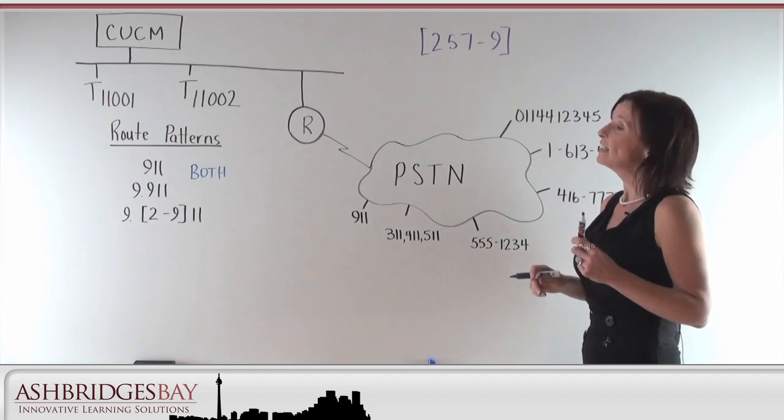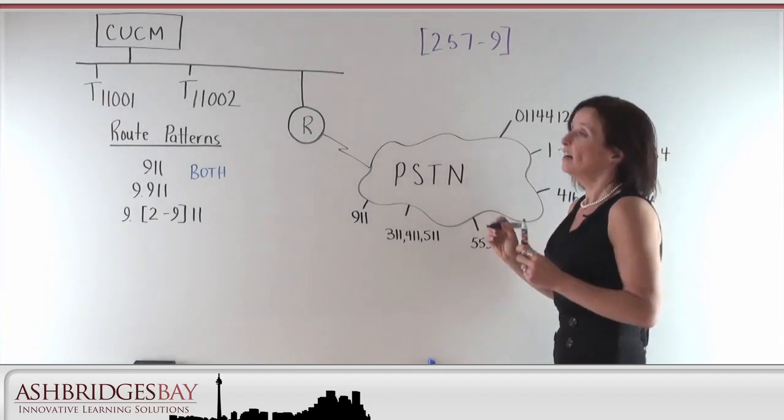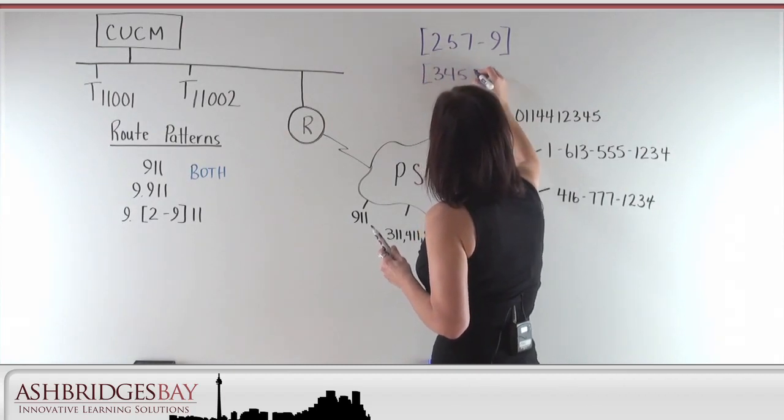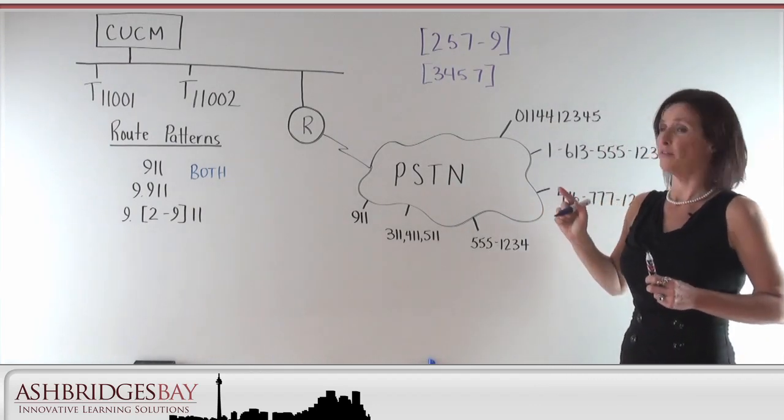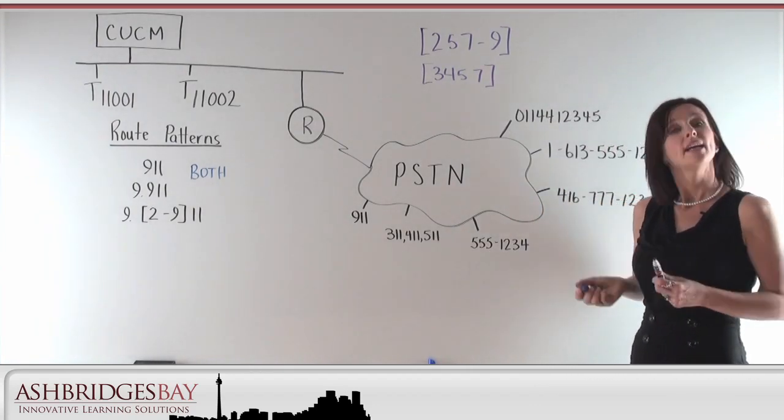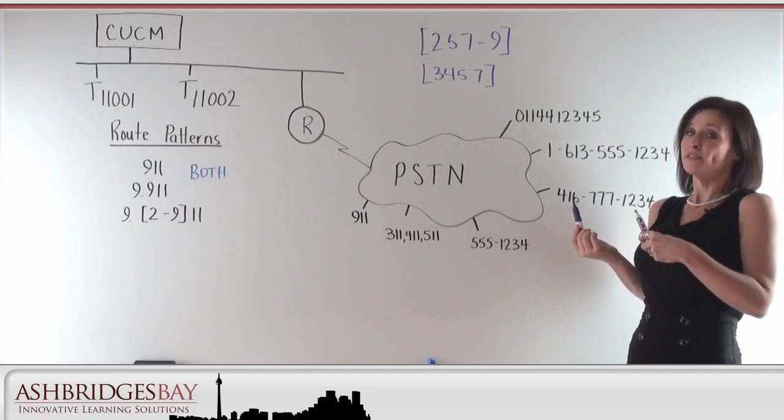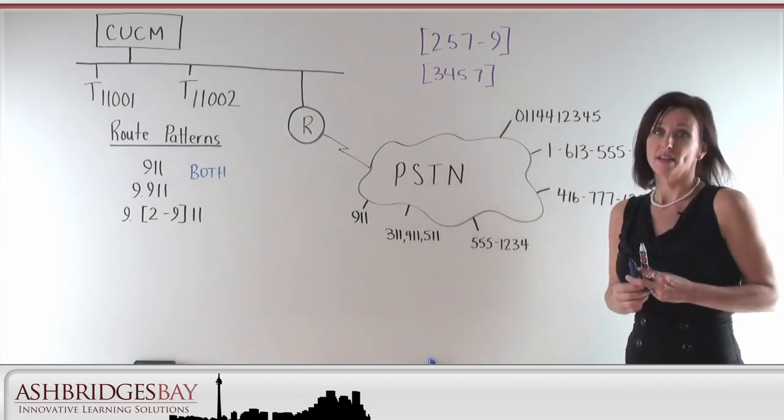I'll give you an example. Two, five, seven, eight, or nine would work in this case. Another example, that doesn't mean dial 3, 4, 5, 7, 11. It means dial 3, or 4, or 5, or 7, followed by 11. And that's another example of a wild card.